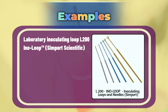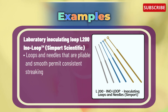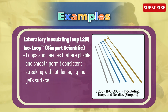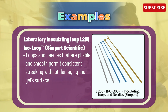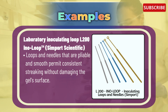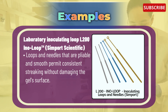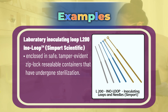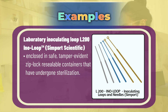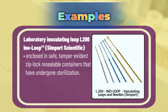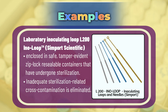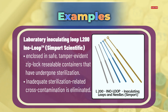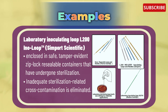Next example is the laboratory inoculating loop L200 Ino-Loop™ (Simport Scientific). These loops and needles are pliable and smooth, permitting consistent streaking without damaging the gel's surface. They are enclosed in safe, tamper-evident, resealable containers that have undergone sterilization. Inadequate sterilization-related cross-contamination is eliminated.